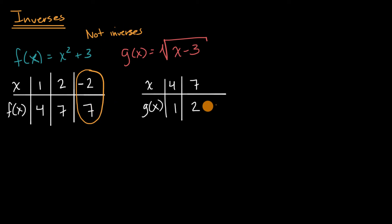So you actually can use specific points to determine that two functions like this, especially functions that are defined over really an infinite number of values. These are continuous functions that using specific points, you can show examples where they are not inverses.